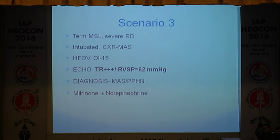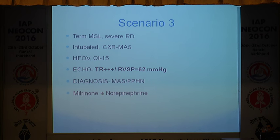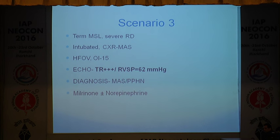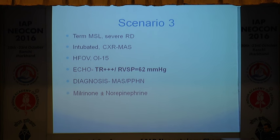The third case is an MAS baby who is intubated, ventilated on HFO, with a very high oxygenation index. Echo shows TR++++, right ventricular systolic pressure of 62 mmHg, which is high — normal is around 25. This is a case of PPHN. If there is no shock, you would want to use milrinone as your first-line drug. Dobutamine can also be used and has some effect. But from clinical experience, milrinone produces better clinical effects compared to dobutamine, so I would use milrinone in this case. If there is a drop in blood pressure with milrinone, I would add norepinephrine.